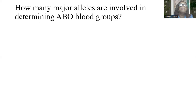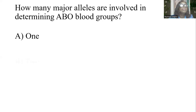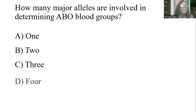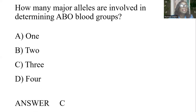How many major alleles are involved in determining ABO blood groups? Options: 1, 2, 3, 4. The answer is C: 3.